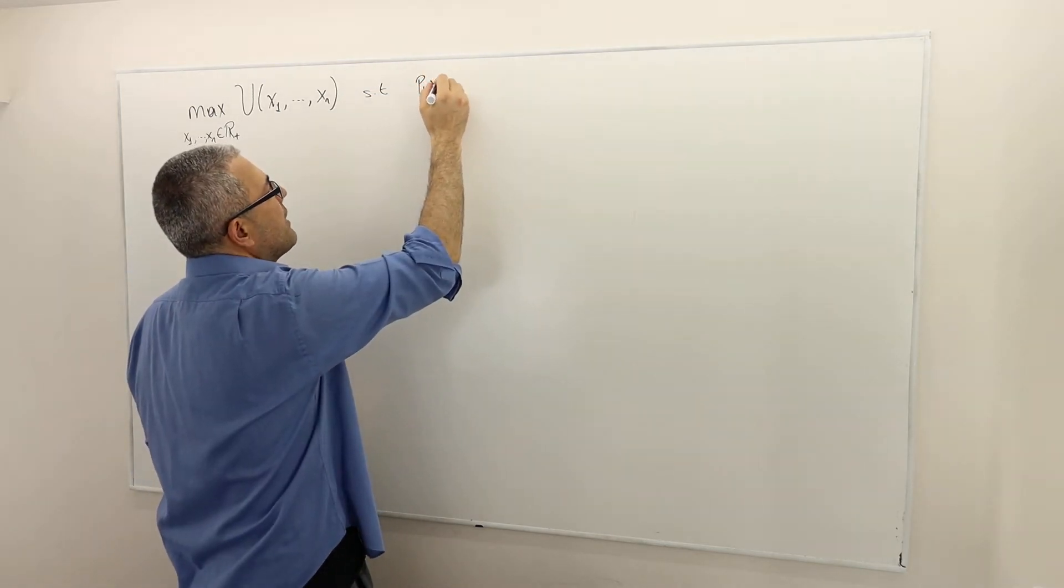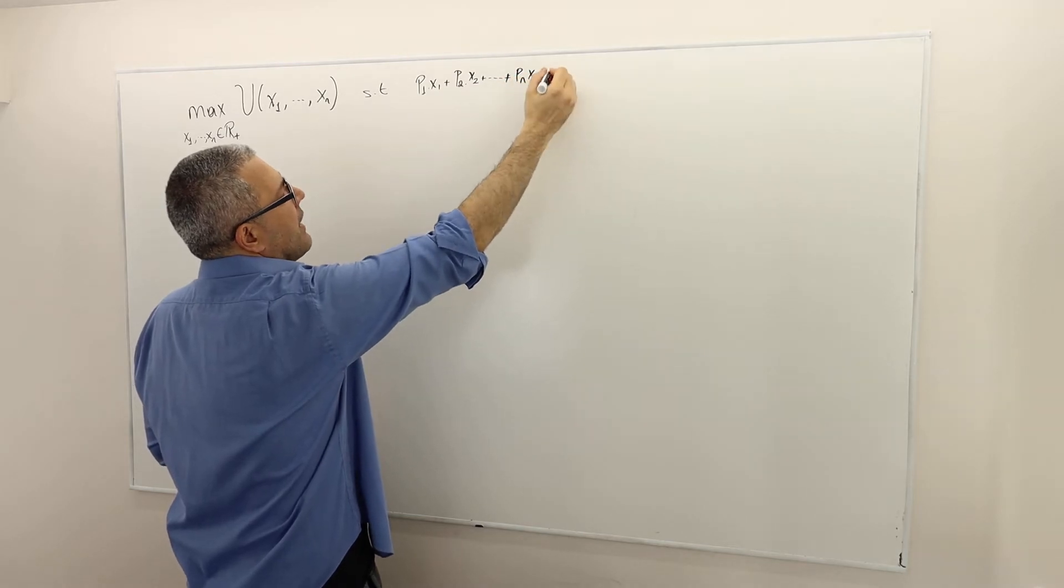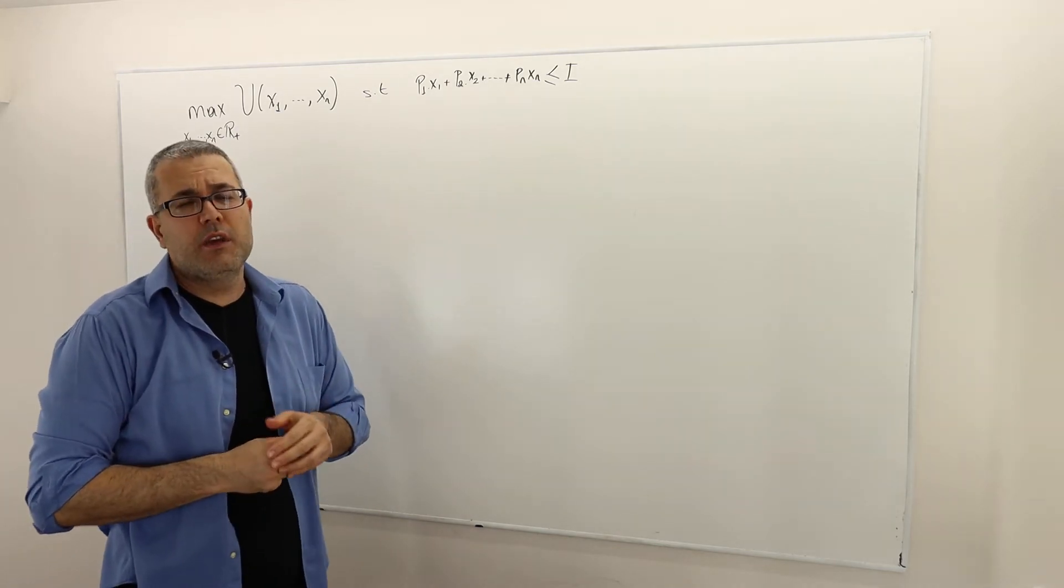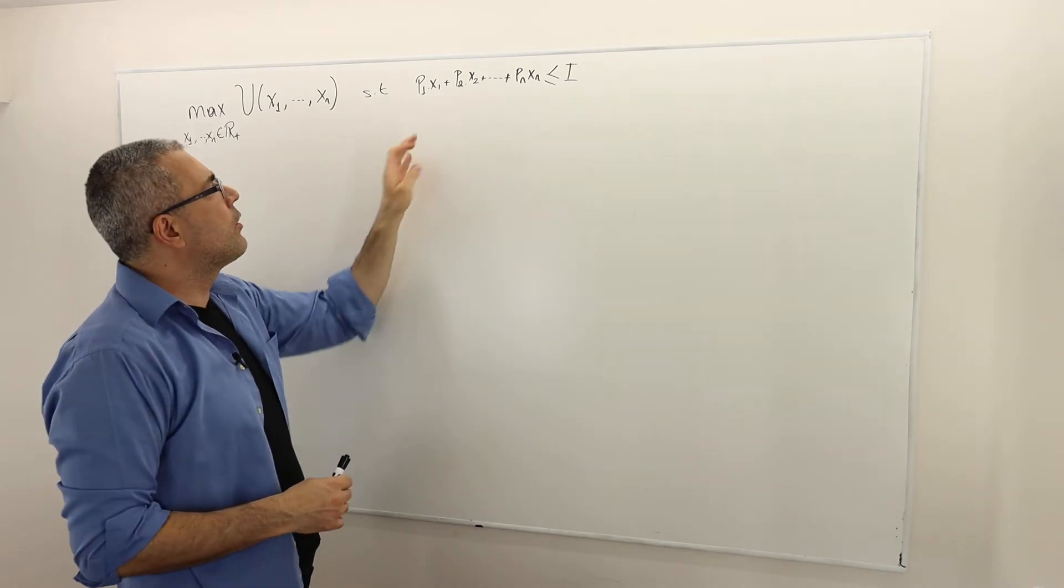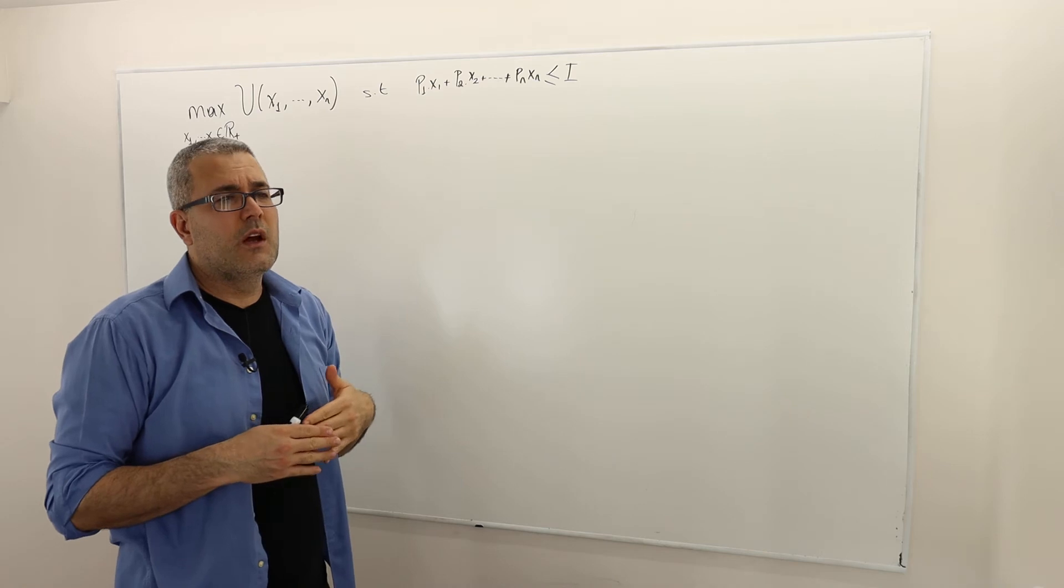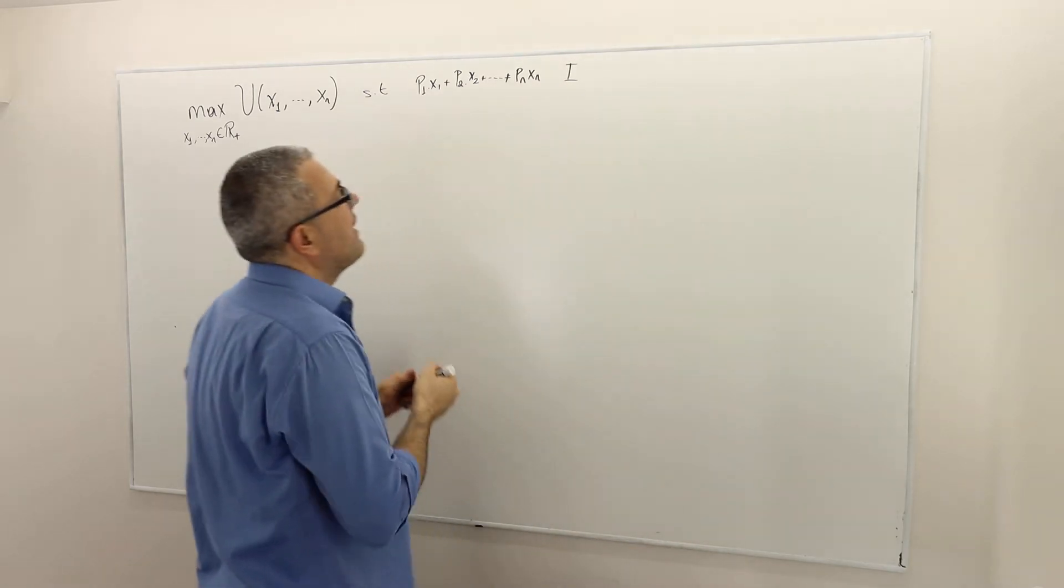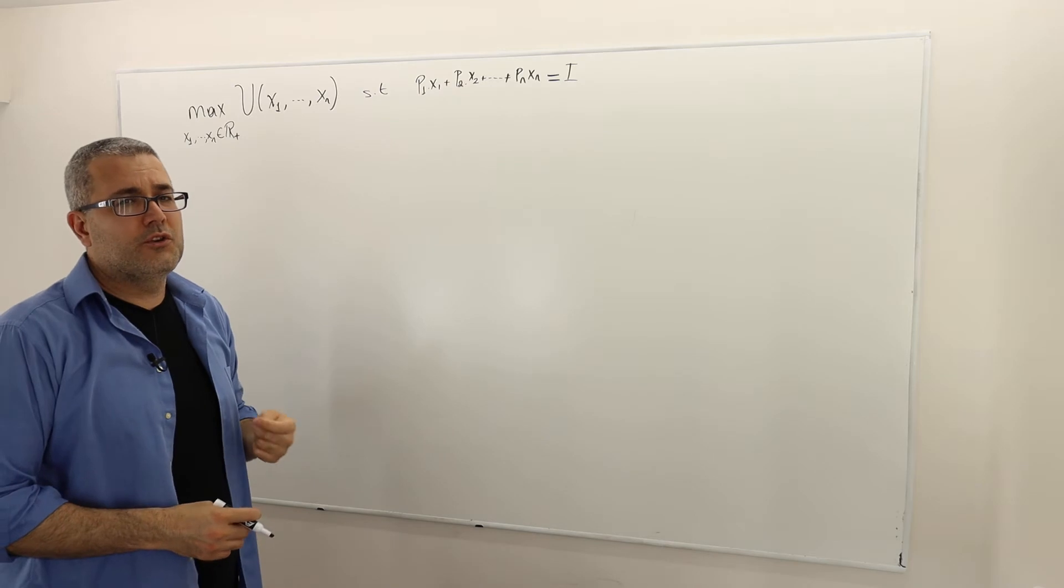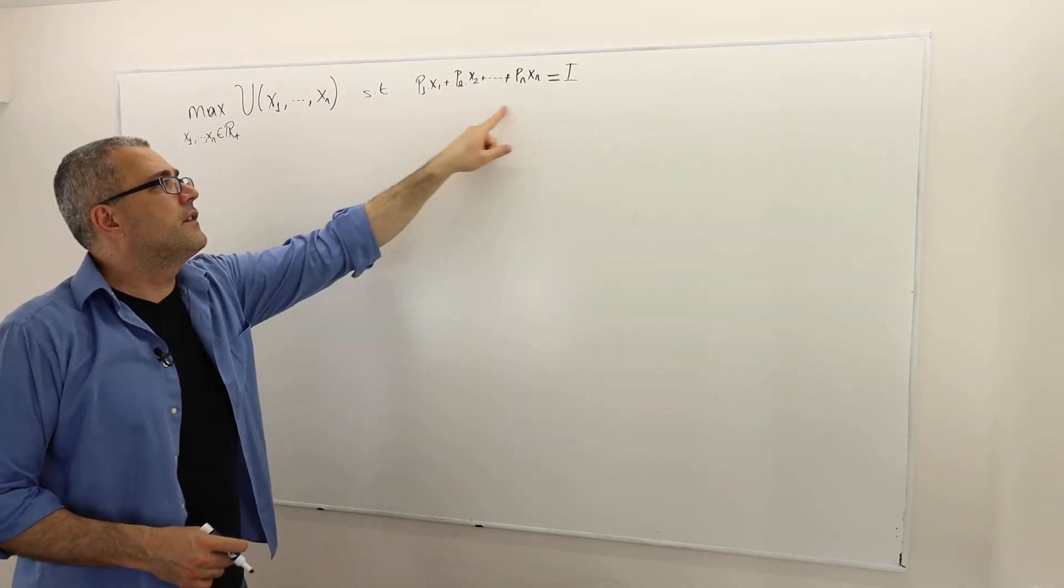Here our budget constraint is price of good 1 times x1 plus price of good 2 times x2, and so on, all the way up to price of good n times xn, which is less than or equal to income. Because we're going to assume most of the time the utility function is an increasing function, as we argued before, this constraint is not going to be strictly less than income because saving money is not going to give the decision maker any utility. So for that reason, without loss of generality, we can indicate this budget constraint as equal to I. This is simply because we keep assuming the utility function is increasing. However, you have to be careful: if the utility function is not increasing, then this equality does not have to be true.